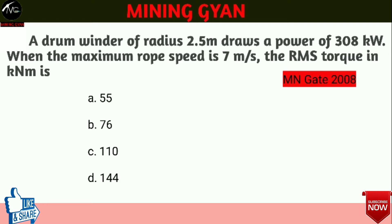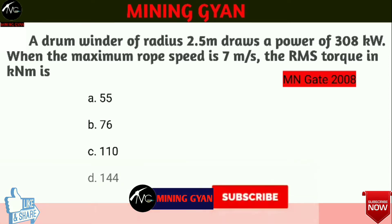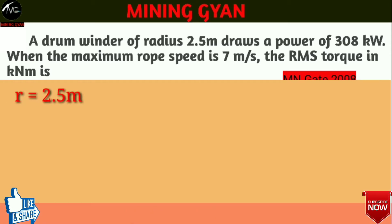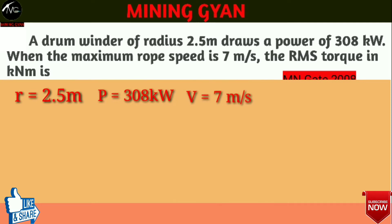A drum winder of radius 2.5 meter draws a power of 308 kilowatt when the maximum rope speed is 7 meter per second. The RMS torque in kilo newton meter is. Question में दिया है: radius of drum winder = 2.5 meter, power of winder = 308 kilowatt, rope speed = 7 meter per second.